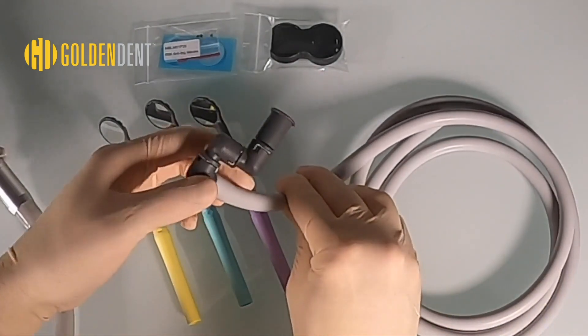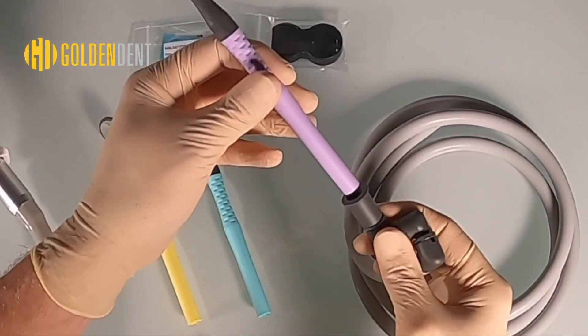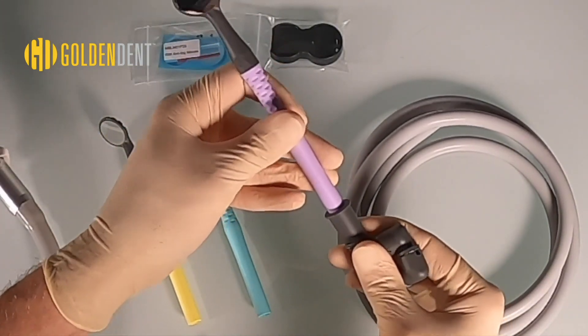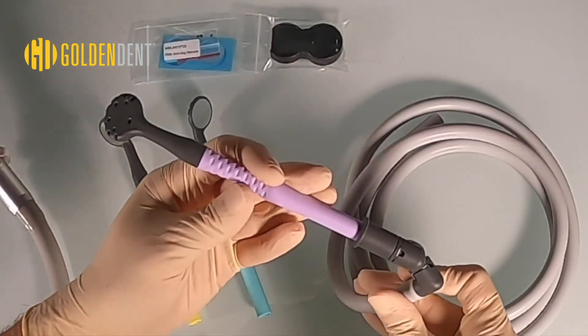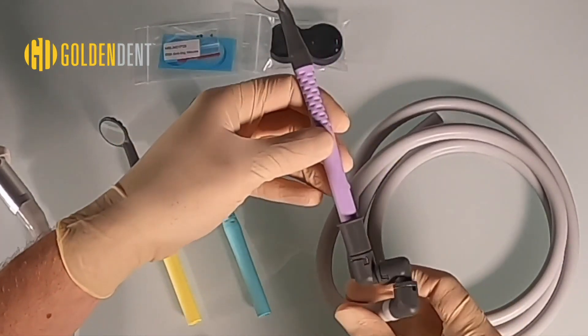The 360 multi-angle pivot connection tubing connects directly to the base of the mirror handle. The 360 pivot reduces drag on the cord and increases movement and accessibility while working.